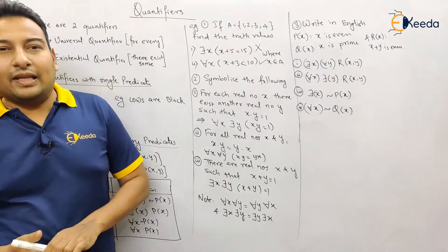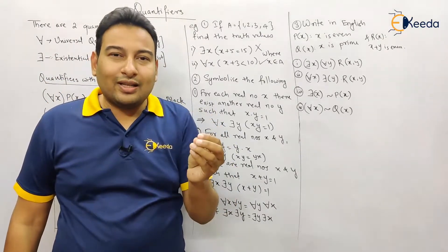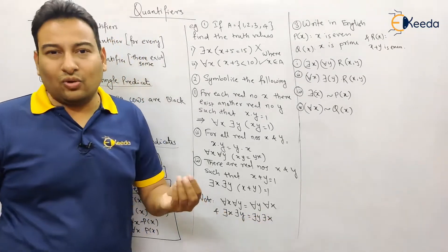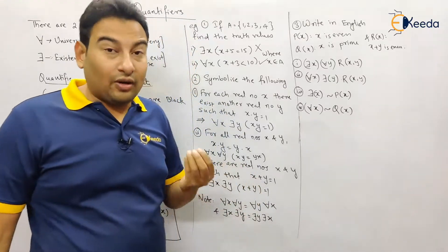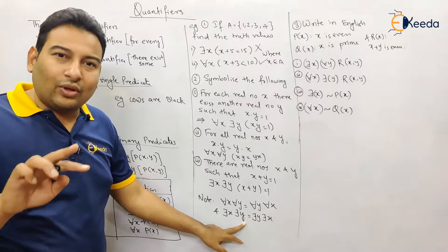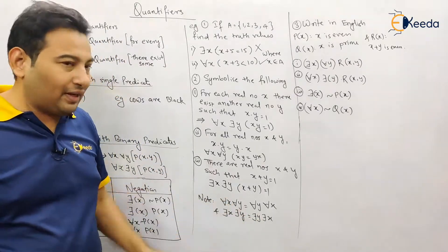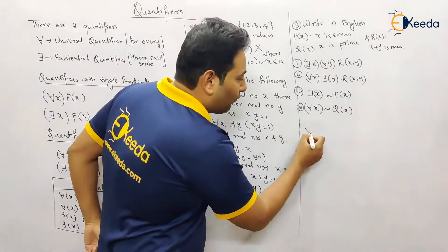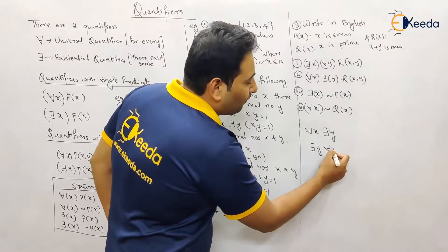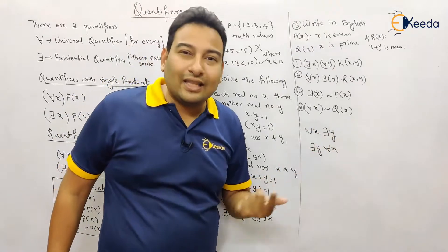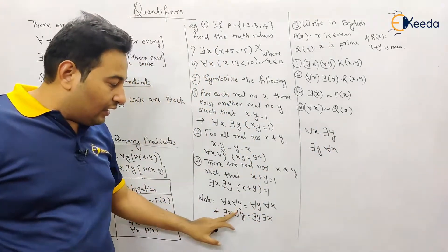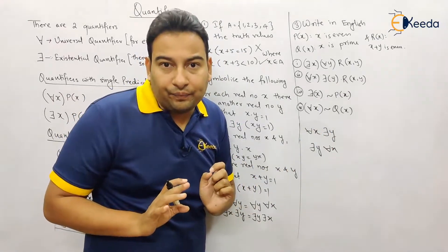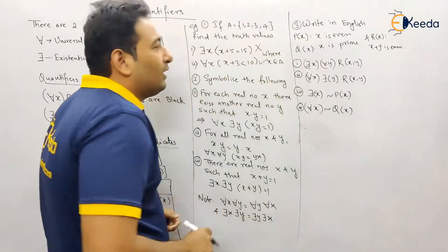An important note: if you have both universal quantifiers, you can swap their position — 'for every x, for every y' can be written as 'for every y, for every x.' The same applies to existential quantifiers. However, if you have a mixed combination — one universal and one existential — you cannot swap their positions. The order matters when quantifiers are of different types.